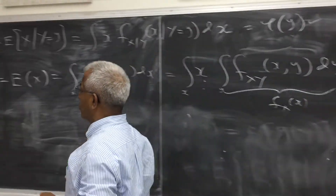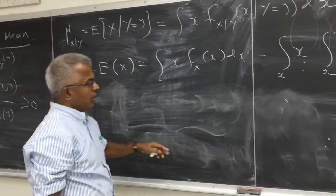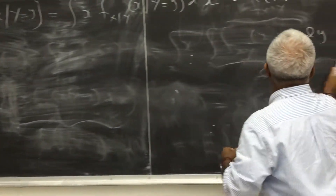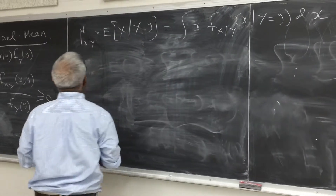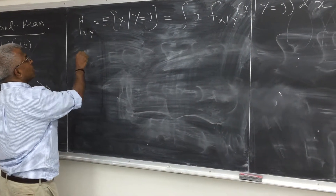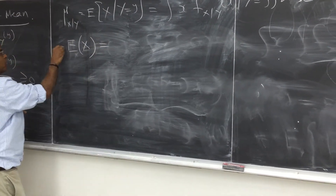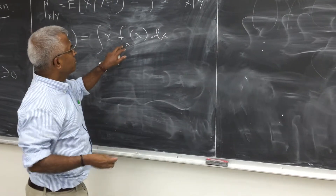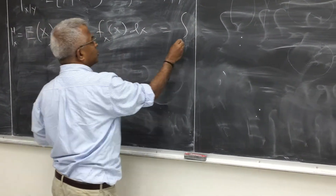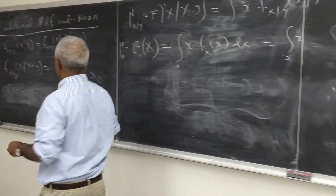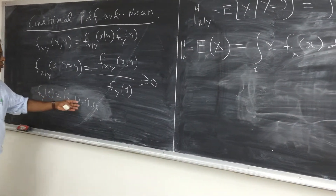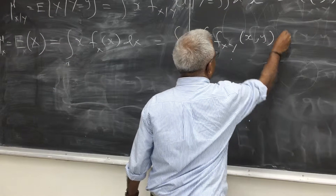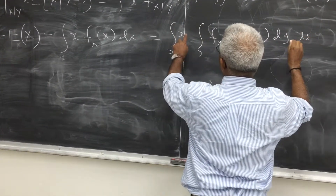Now let's look at the unconditional mean of X. That will be the integral of X multiplied by f(X,X) dX. Let me rewrite this — instead of f(X,X), let me write it in terms of the joint density function, so you integrate out Y from the joint density function f(X,Y), and then integrate over X.